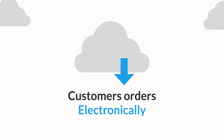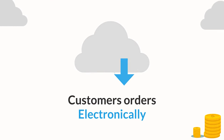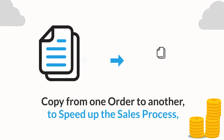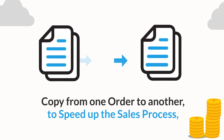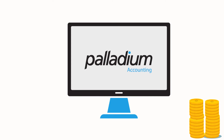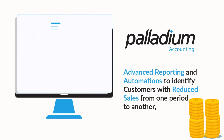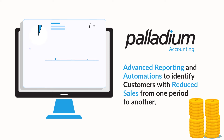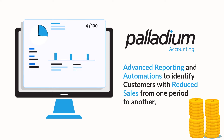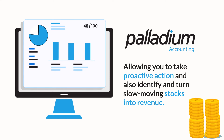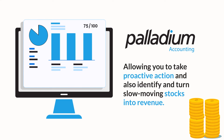Download customer orders electronically or copy from one order to another to speed up the sales process. Use our advanced reporting and automations to identify customers with reduced sales from one period to another, allowing you to take proactive action and also identify and turn slow-moving stocks into revenue.